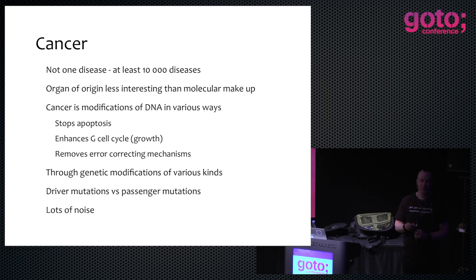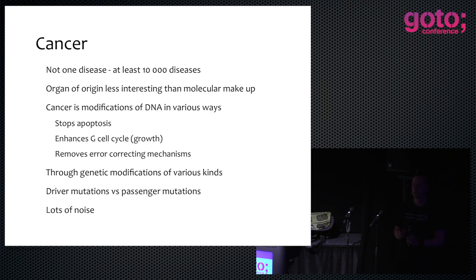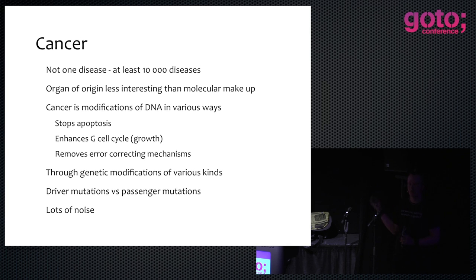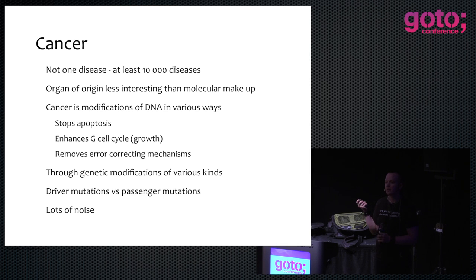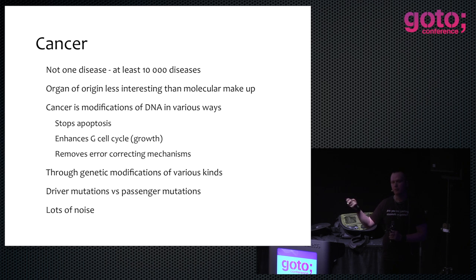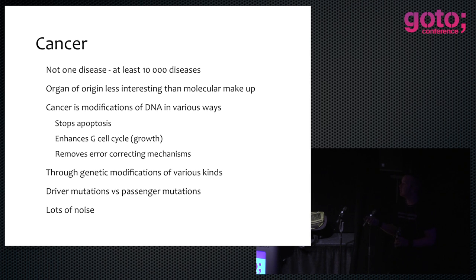We also classify cancer based on where it happens. If you get breast cancer, it's very different from getting skin cancer. In reality, the genomic mutations are actually very similar to each other in many cases. These are modifications of DNA. For example, you can have a mutation that stops cells from killing themselves, which they will do if something goes wrong — but if you have a mutation that stops that, then you get a cancer. Or you can have something that enhances the growth cycle to make cells multiply much faster, or removes one of the error correction mechanisms.